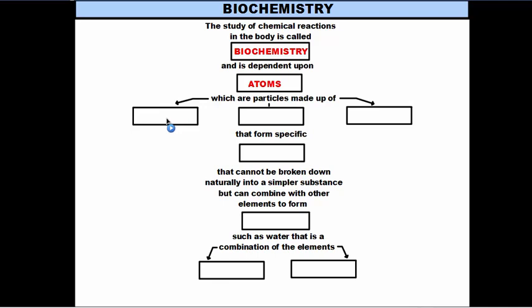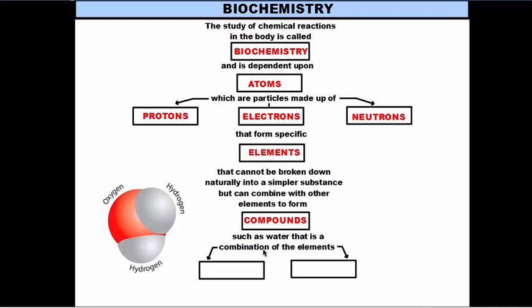Now atoms are particles that are made up of subatomic particles called protons, electrons, and neutrons. Based on the number of protons that a material may have, that'll form a specific element, as you may remember from the table of elements. Elements are materials that cannot be broken down naturally into a simpler substance. However, they can combine with other elements to form compounds. So when you have two or more elements bound together, you form a compound. One example of a compound is water, which is a combination of elements such as hydrogen and oxygen. The empirical formula of water is H2O, meaning two hydrogens to one oxygen.